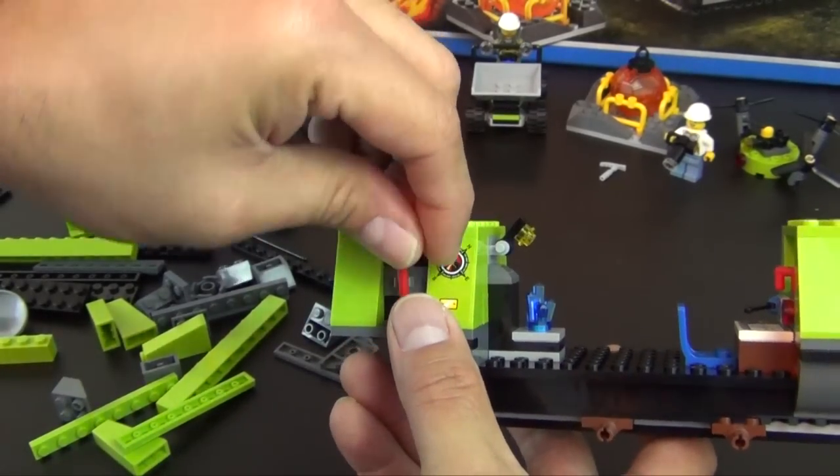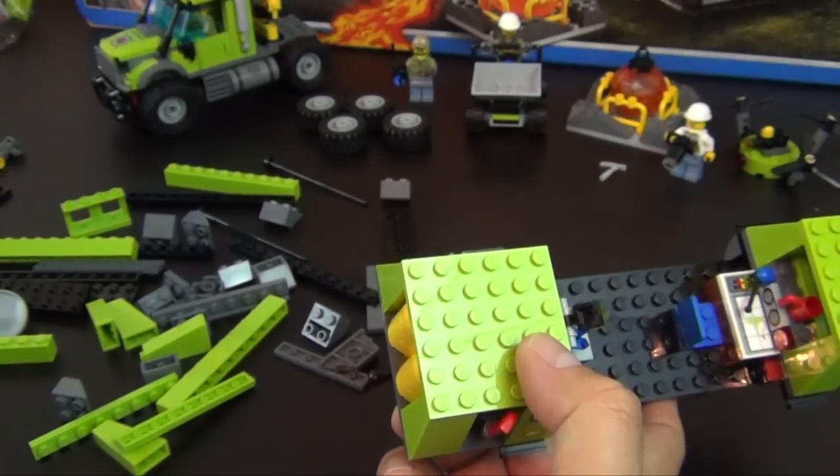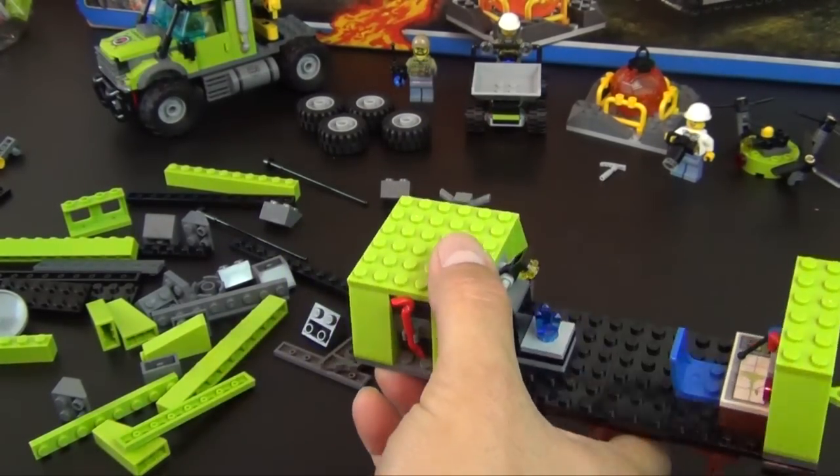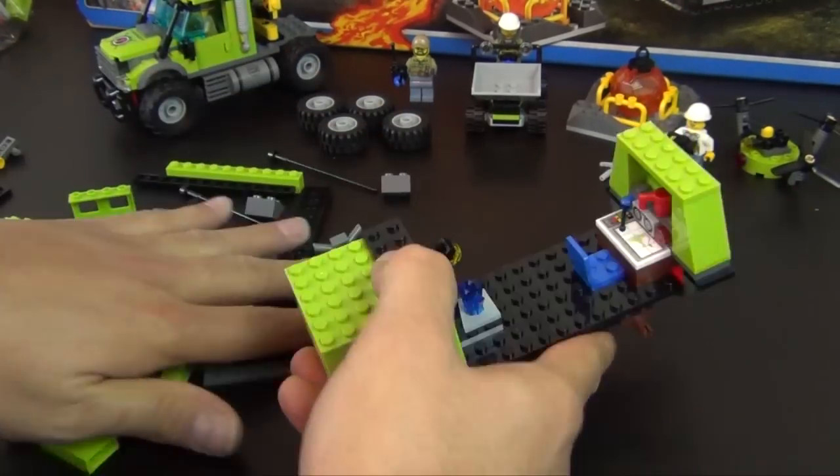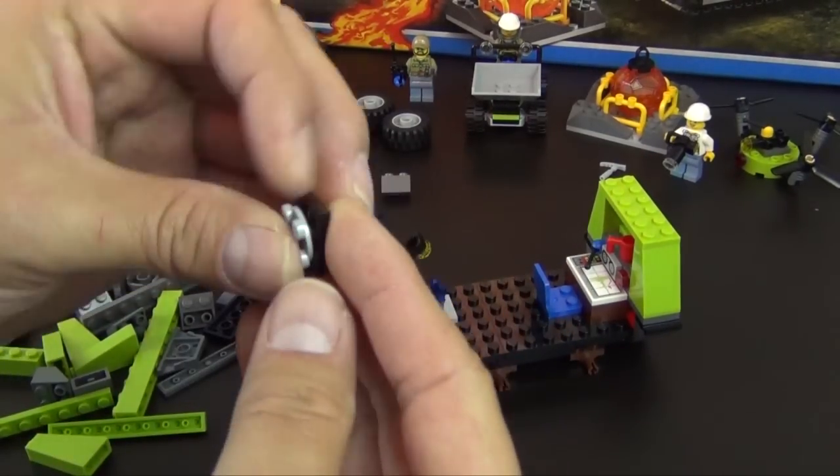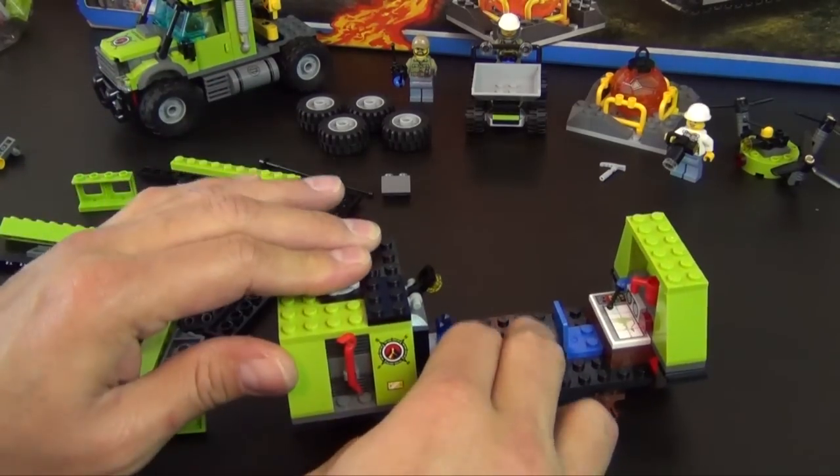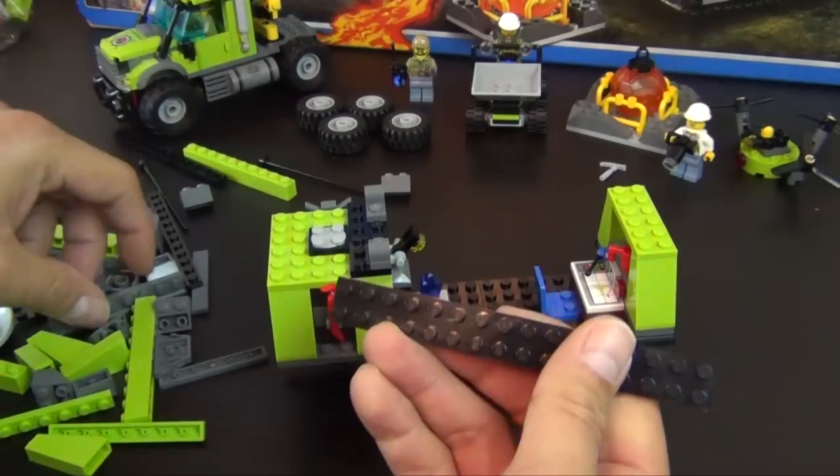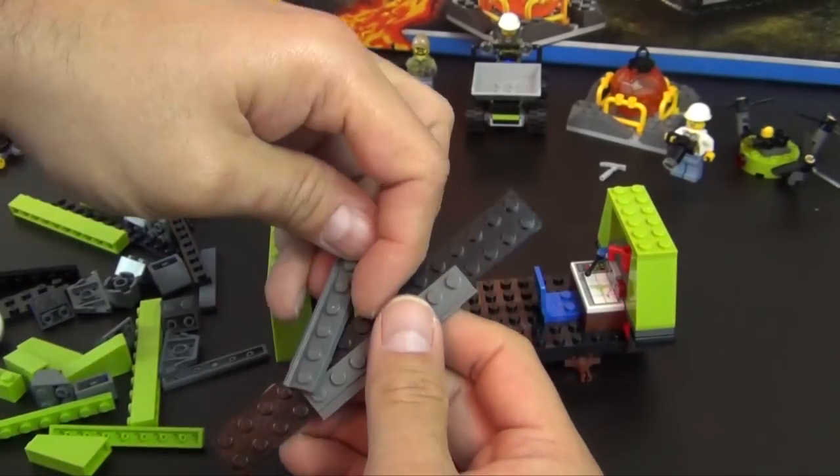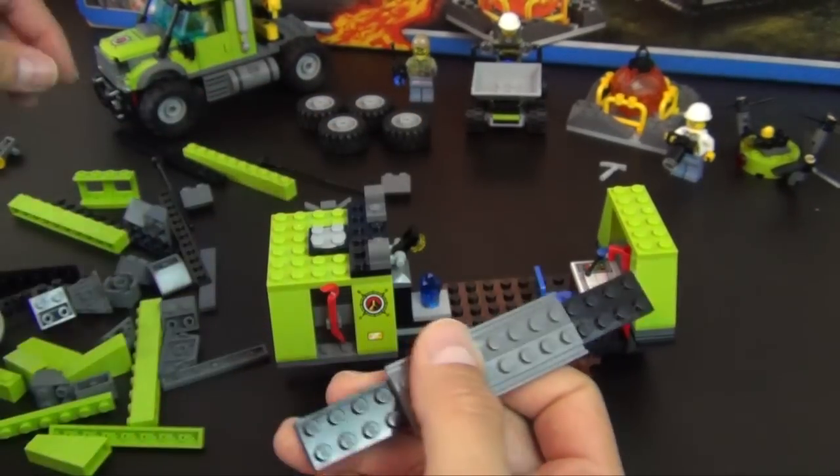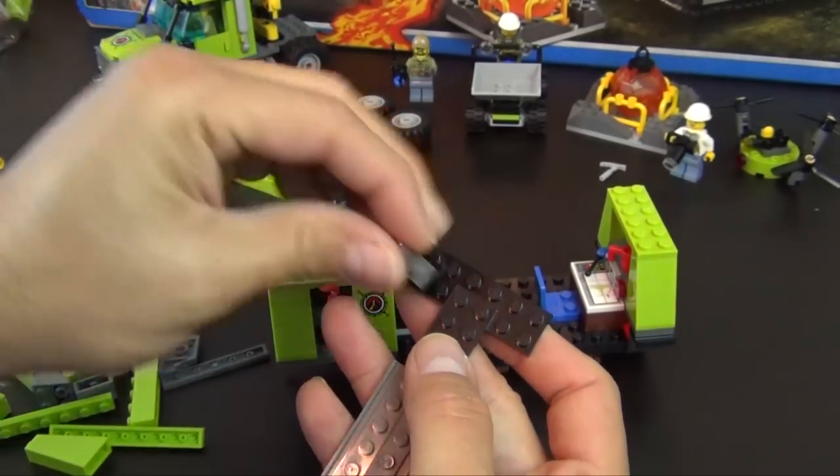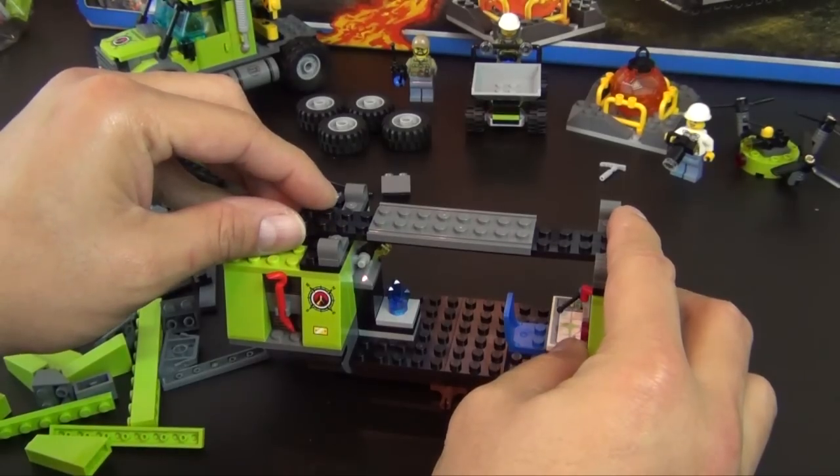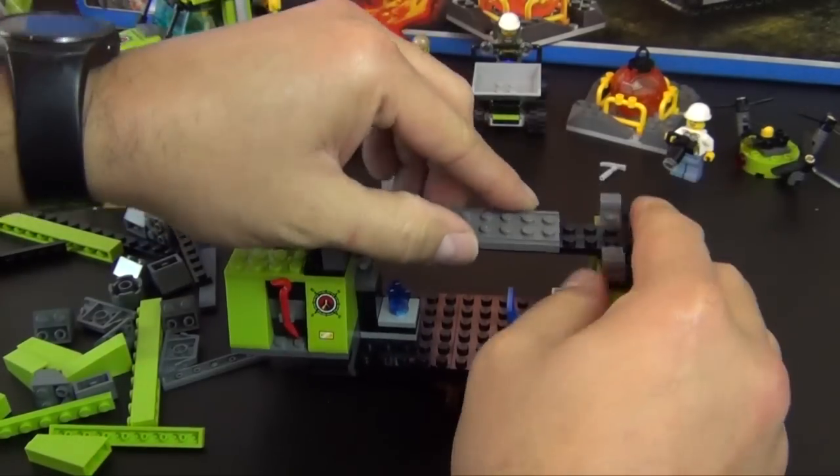This piece slides in there, put a six by six plate on top and that will interlock everything together. We have a crowbar and a jackhammer on the side. This turntable plate goes in this little turntable piece.